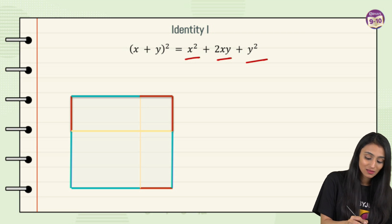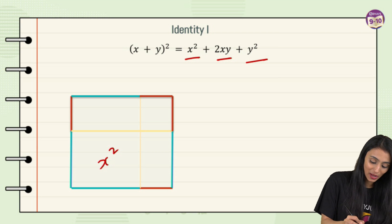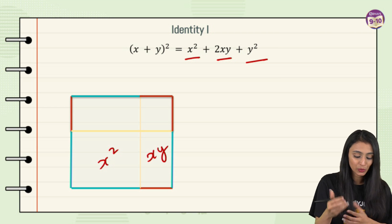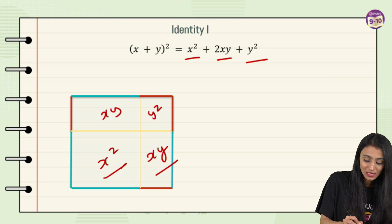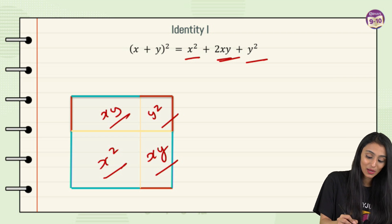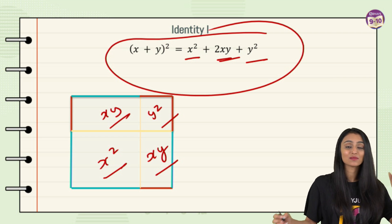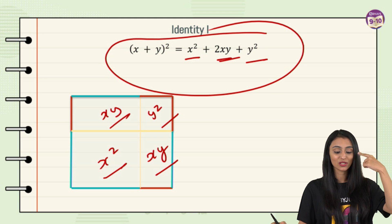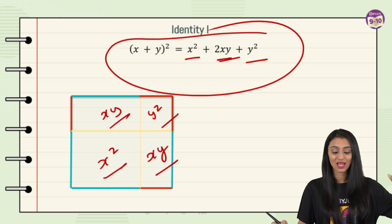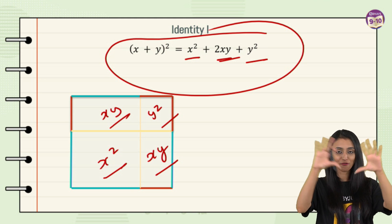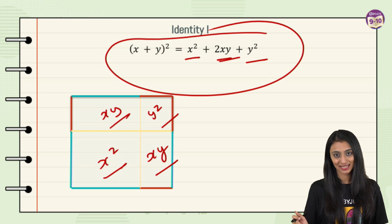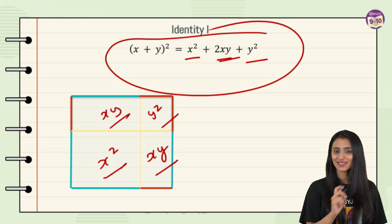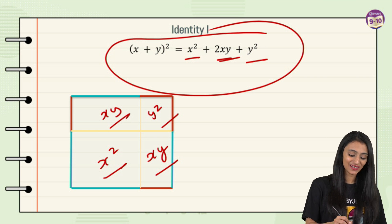Adding everything up: x² + xy + xy = x² + 2xy + y². That's how we get (x + y)² = x² + 2xy + y². This is the area for the entire square — that's our first identity.